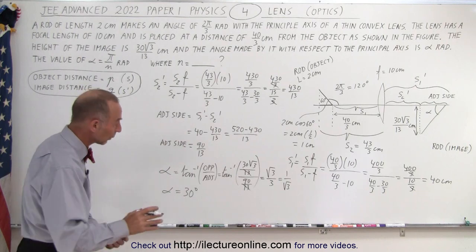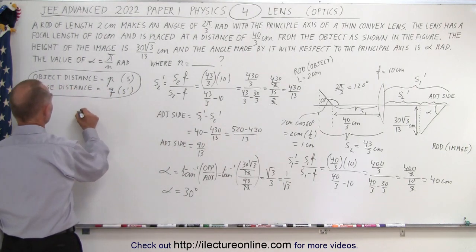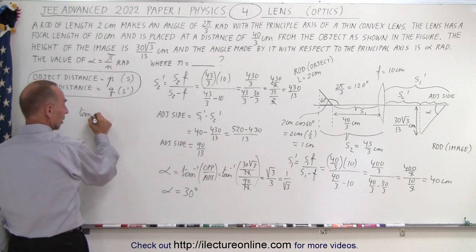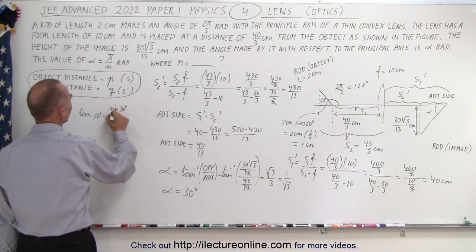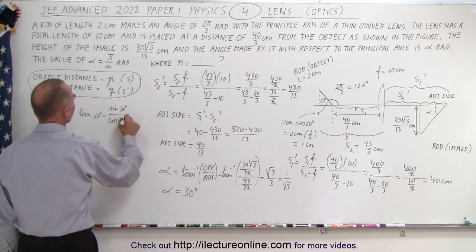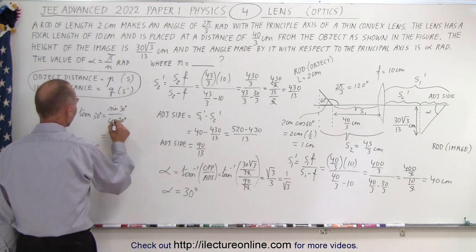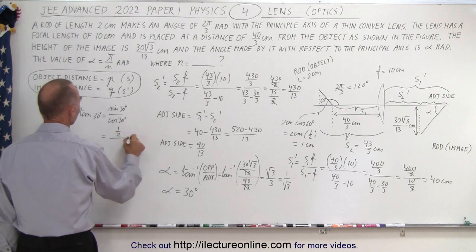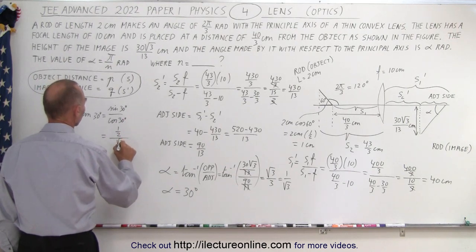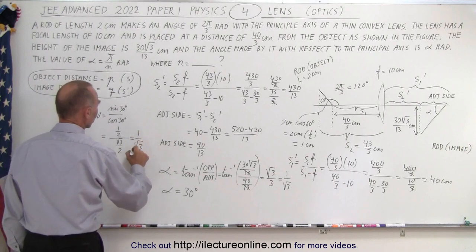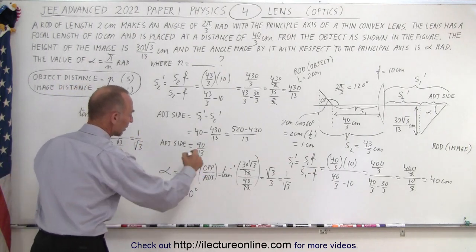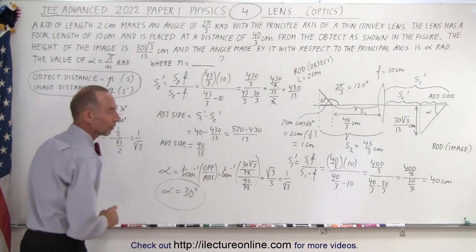If you don't remember that, you can verify: tan(30°) = sin(30°)/cos(30°) = (1/2)/(√3/2). The halves cancel, giving 1/√3. So you can quickly confirm the angle is 30 degrees.